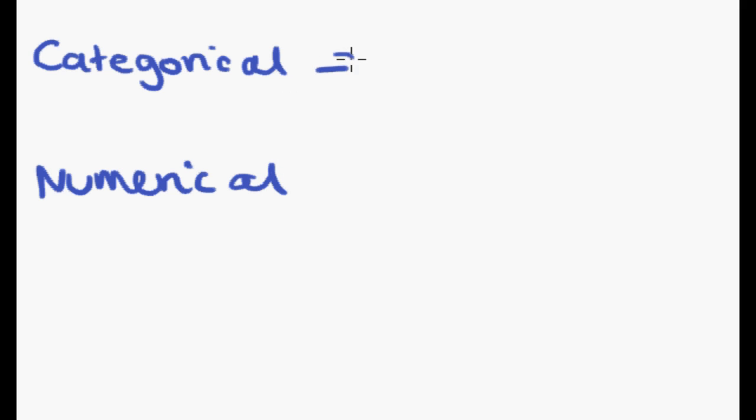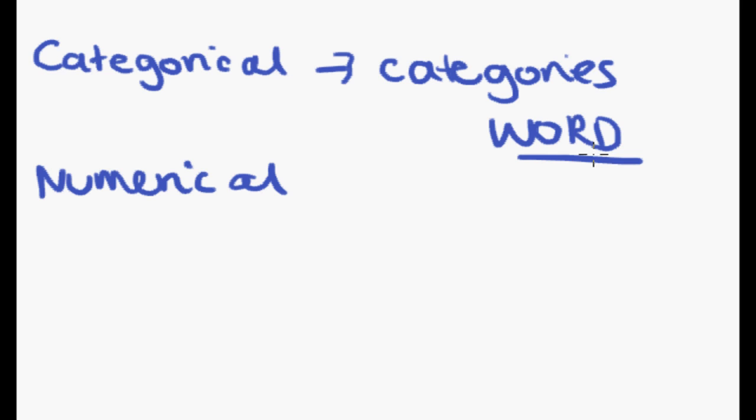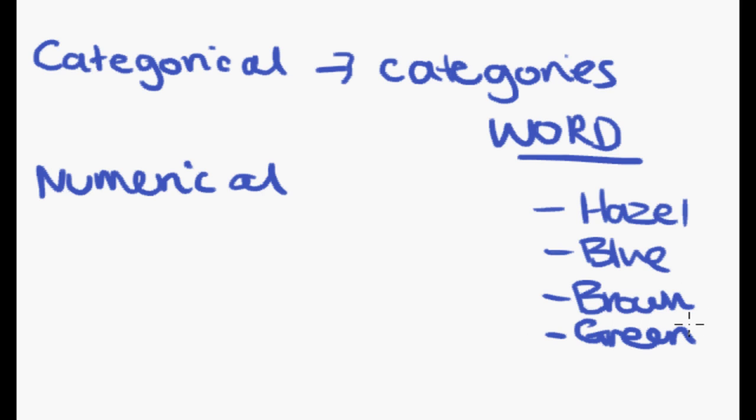And those are basically what they sound like. Categorical data come in the form of categories, and those are word responses. So, if I'm talking to a group of people and I'm trying to collect information about their eye color, for example, I might get hazel, and blue, and brown, and green as responses. And those are all words.